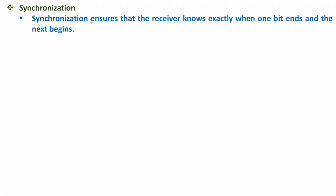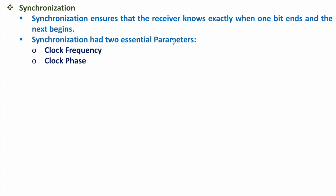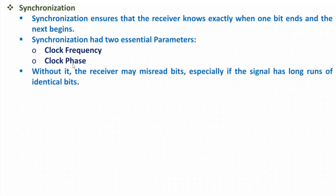Synchronization ensures that the receiver knows exactly when one bit ends and the next bit begins. It has two essential parameters: clock frequency and clock phase. Synchronization is very essential — without proper synchronization at the receiver side, the receiver may misread bits, especially when the signal has long runs of identical bits.